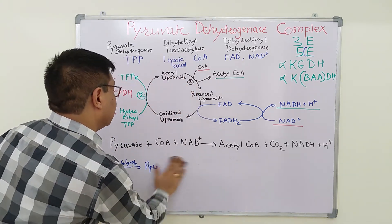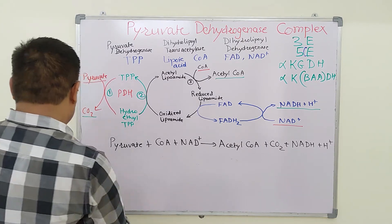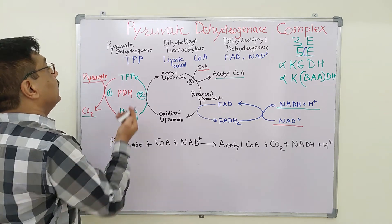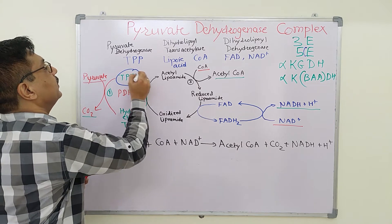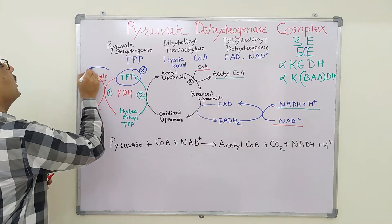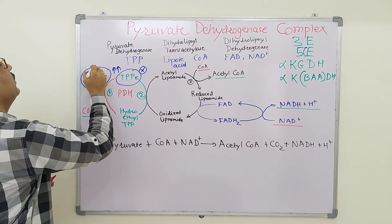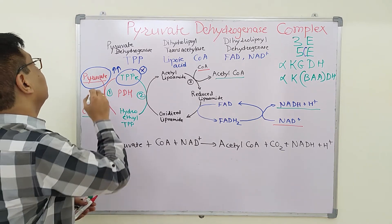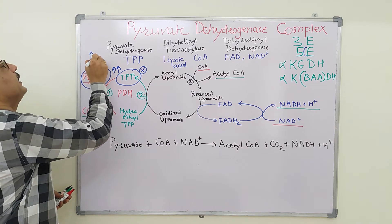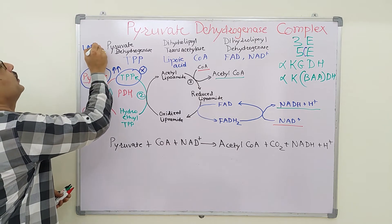We will now see the deficiency of thiamine pyrophosphate. If TPP is deficient, this whole reaction cannot proceed. There occurs accumulation of pyruvate, and accumulated pyruvate leads to pyruvate acidosis. This pyruvate is converted into lactate with the help of lactate dehydrogenase, resulting in lactic acidosis.